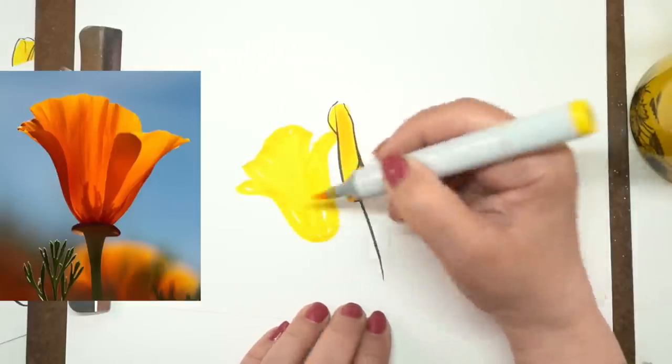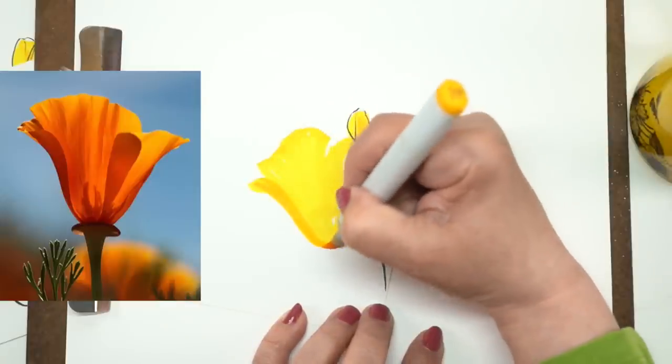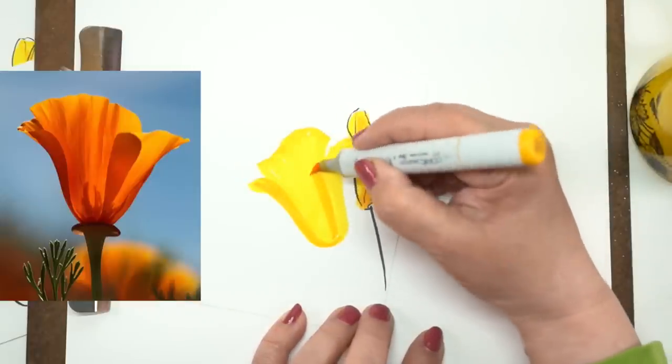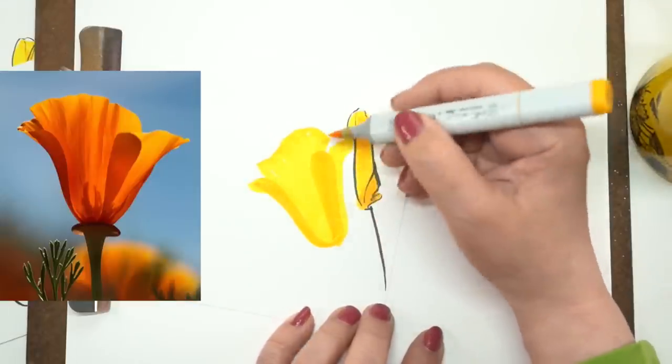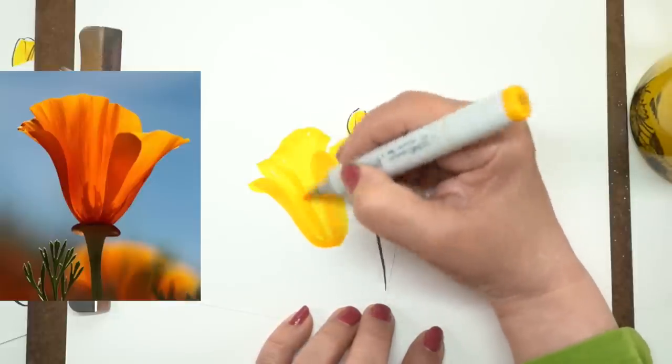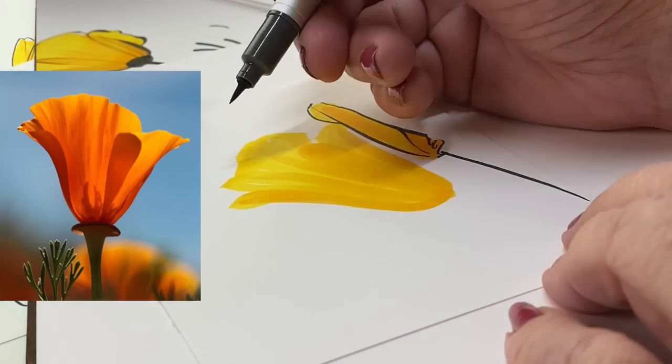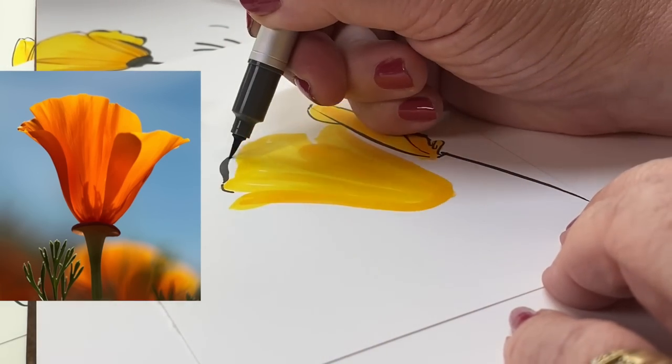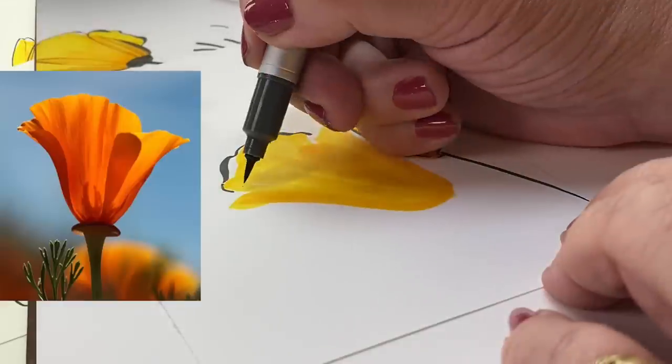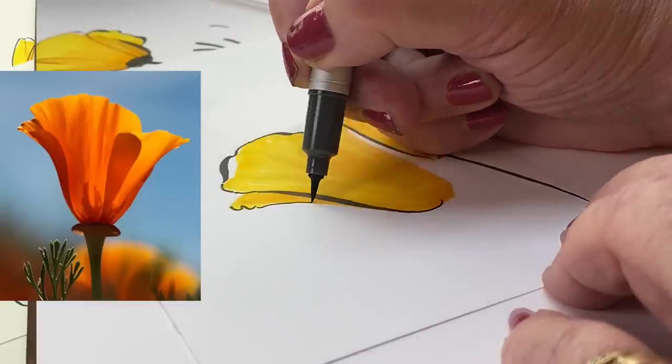Now you can do the same idea for any flower. Look for flowers that are, I would say, simply shaped to begin with. Don't try something like a mom that has a thousand petals on it. Try something really simple. And these only have four petals. And in a view like this, where you're seeing it from the side, you're only seeing like one big full petal and then half of two petals on either side.